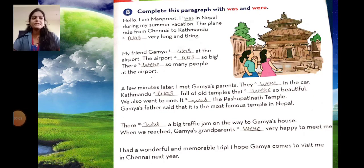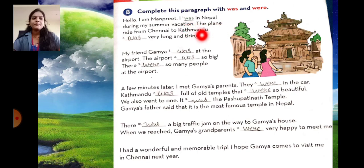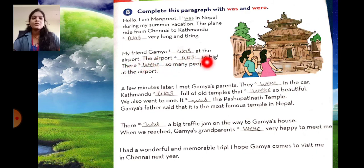Now students, Exercise B: complete this paragraph with was and were. Hello, I am Manpreet. I was in Nepal during my summer vacation. The plane ride from Chennai to Kathmandu was very long and tiring. My friend was at the airport. The airport was so big. There were so many people at the airport.